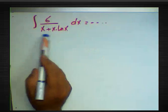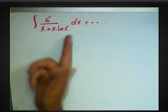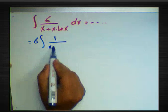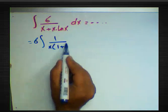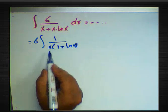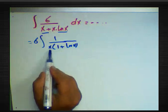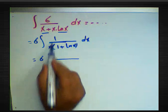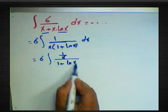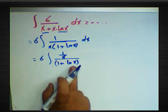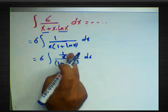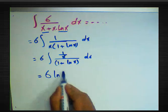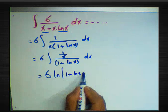For integration of 6 / (x + x·ln x) dx, we take 6 outside. The common factor between the two terms in the denominator is x, so we factor out x: 6 · ∫ 1/[x(1 + ln x)] dx. Writing it as 6 · ∫ (1/x) / (1 + ln x) dx — since the derivative of (1 + ln x) is 1/x — the result is 6·ln|1 + ln x| + C.